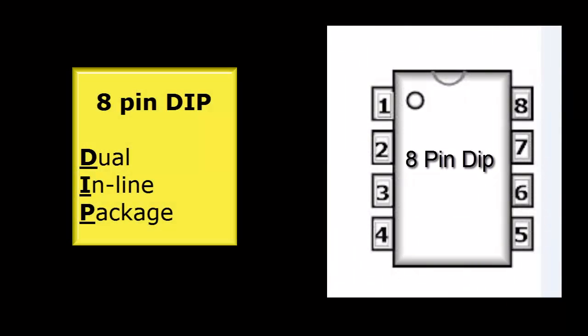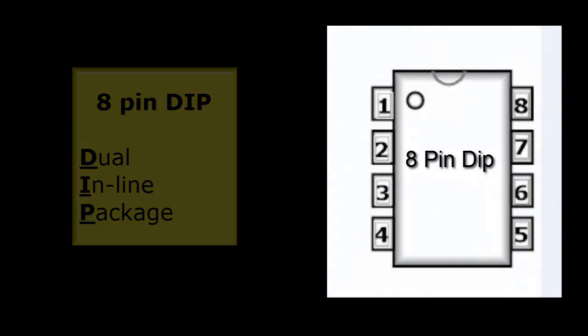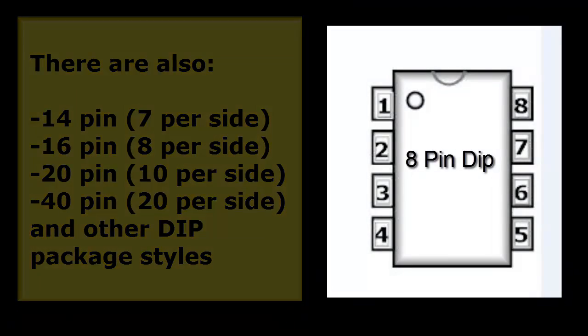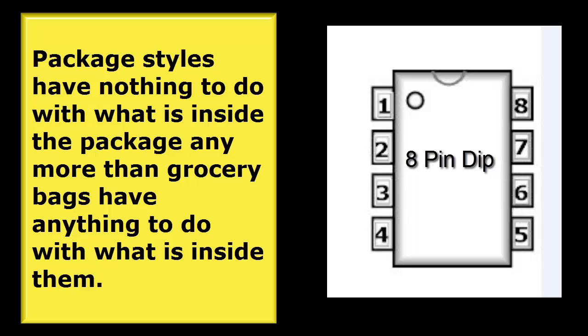Now when we look at packages the dual inline package is a very popular package for hobbyists. And basically the smallest one for the most part is the 8 pin dip. But there are 14 pin, 16 pin, 20 pin, and 40 pins and even others I haven't mentioned here for this package style. And once again there's the numbering on this particular package style on the right. Package styles have nothing to do with what's inside the chip. You can have timer chips, digital chips, all kinds of chips in the same package style. This 8 pin dip is really popular.